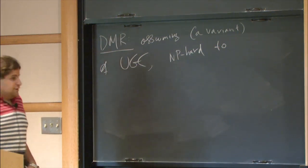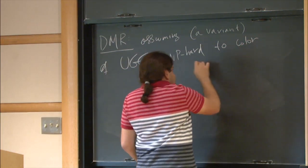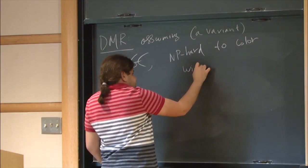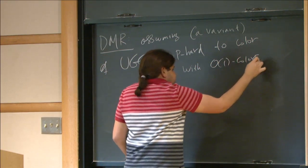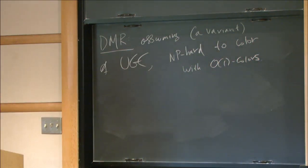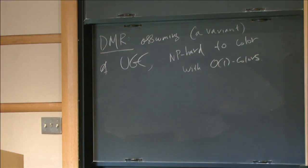I'll define it in a second. It's NP-hard to color with constantly many colors. Okay? So this is, again, not matching the algorithms, but it's better than five.